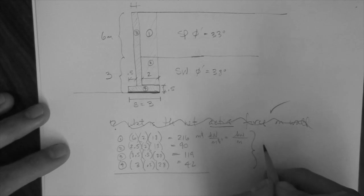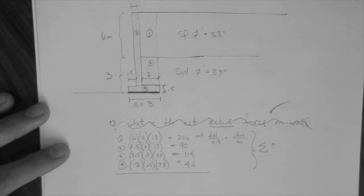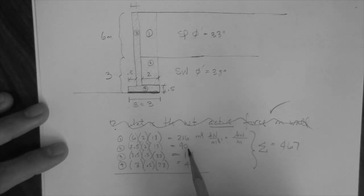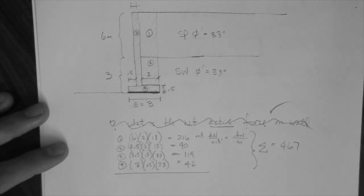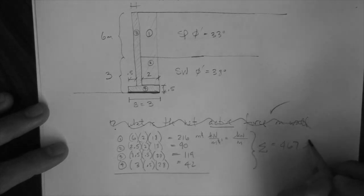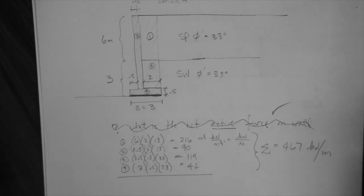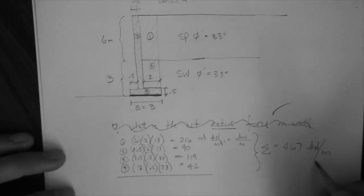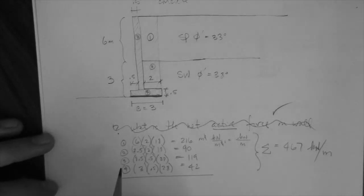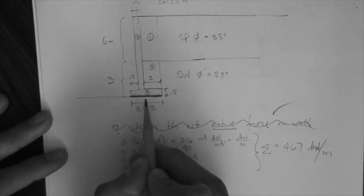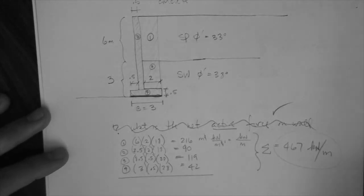So here, these are the weights acting on this base here. So if we sum, the sum is equal to 467. 467 kilo newton per meter. Now, this is a force per meter, per unit meter, right? So now, what we have to do is convert that force, or calculate, sorry, the resistance that develops down here with that force.